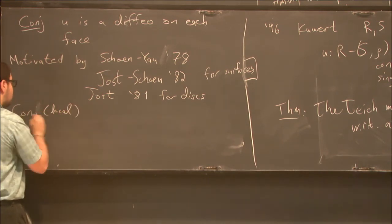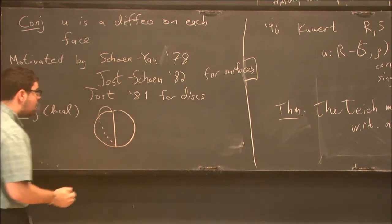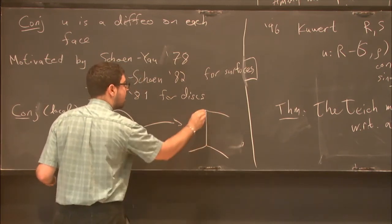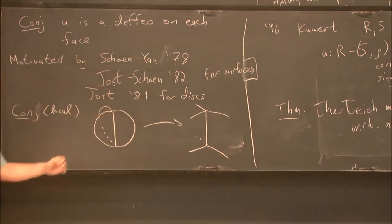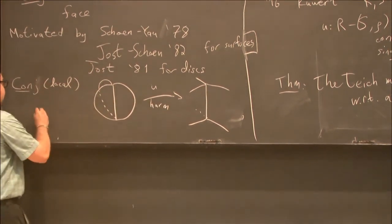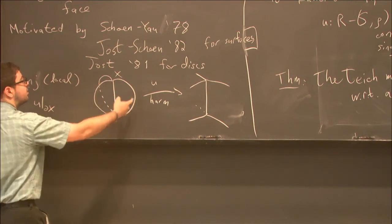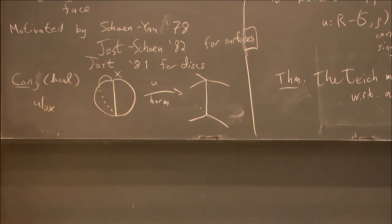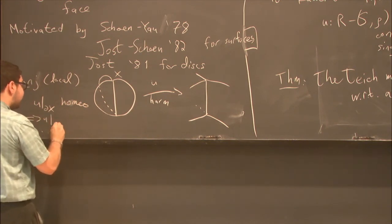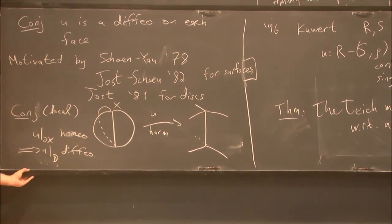I'll just draw the picture. If you have n half disks glued along a common edge like so, so that each half disk is going to the corresponding half plane, it says that if you, the conjecture says that if you, on the boundary of X, I'll call this X, the boundary is the three semi-circular arcs, ignoring the common edge. If, if this is a homeo, then U restricted to each half disk should be a diffeo. So this is the local version of conjecture, which should be very approachable, and I hope to make a lot of progress on this term.